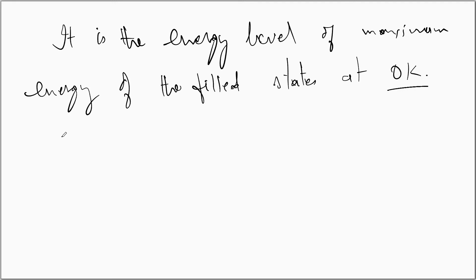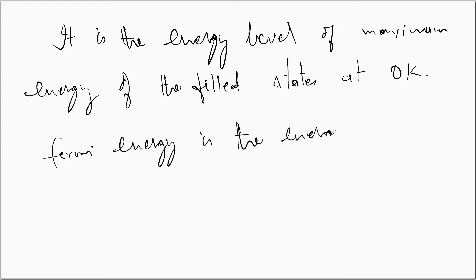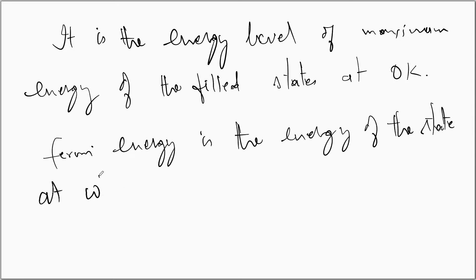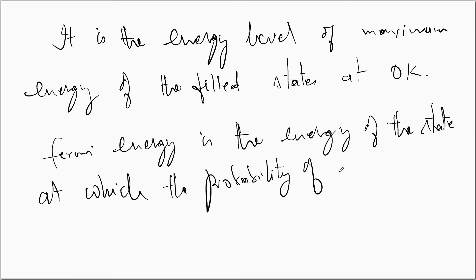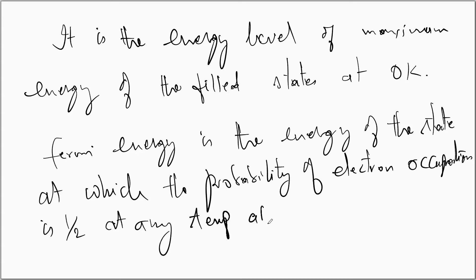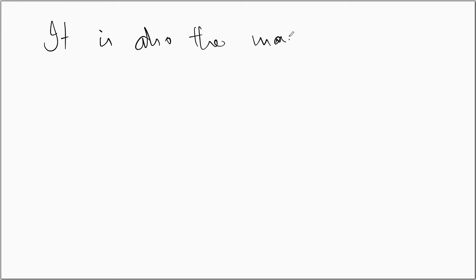Further, we can write: Fermi energy is the energy of the state at which the probability of electron occupation is half at any temperature above 0 Kelvin. It is also the maximum energy level of filled states at 0 Kelvin.